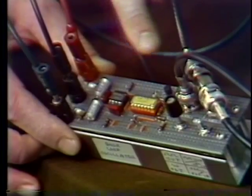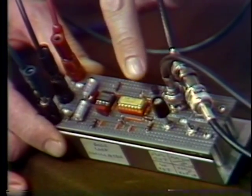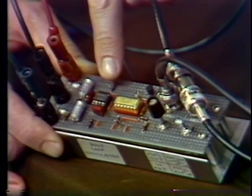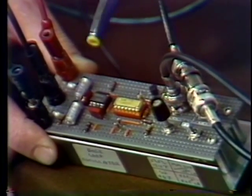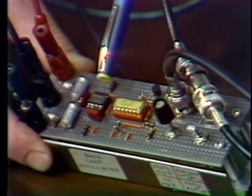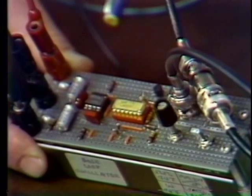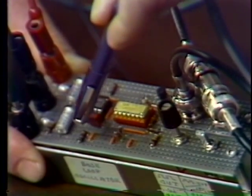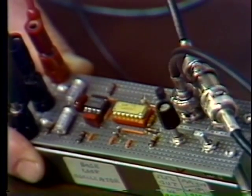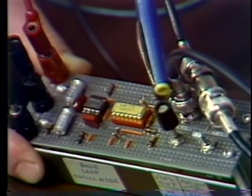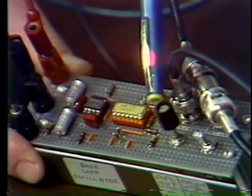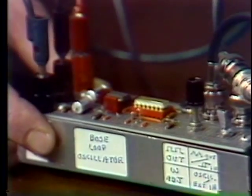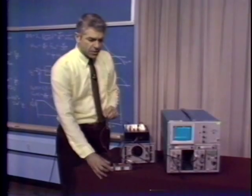Here is our home-built function generator. We actually use an integrated circuit comparator to provide the Schmidt trigger function. Here's an operational amplifier — this is the amplifier that mechanizes the integration. This is the capacitor used for the integration, and this is the resistor, or at least part of the resistor. We also have a potentiometer that allows us to change the total input resistance to the integrator, and that's what we use to change the frequency of operation. Various output signals are displayed on the oscilloscope.